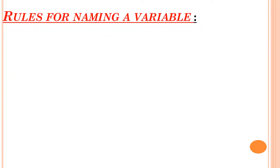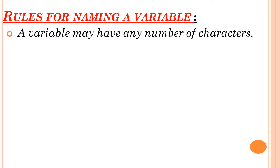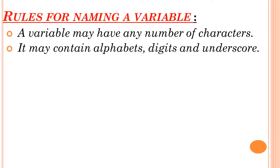First is about rules for naming a variable. We need to follow some rules while giving a name to any variable. First, a variable may have any number of characters — don't think it should be a single or two-letter word. It may contain alphabets, digits, and underscore, but it should begin with an alphabet only.